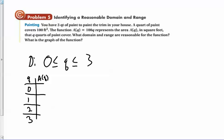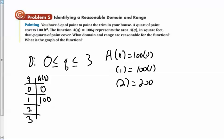Now using the rule A of zero equals 100 times zero, so that's zero. If I put one in there, that's 100 times one, so that's a hundred square feet. If I put two in there, that's 200, so that's 200 square feet. And if I put three in there, that's 300 square feet. So my range then can be, my range will be anything from zero to A of Q to 300 square feet.